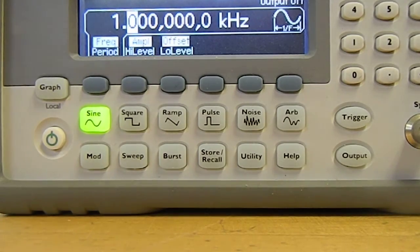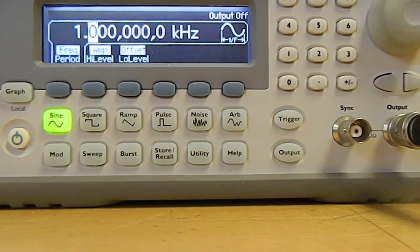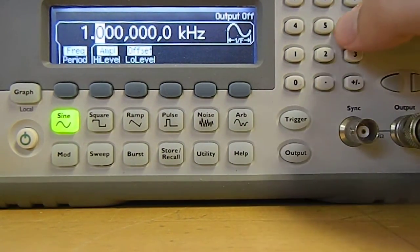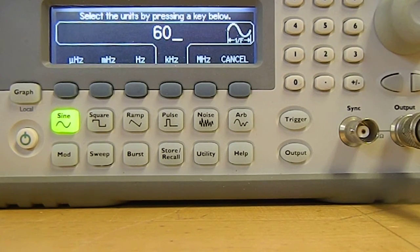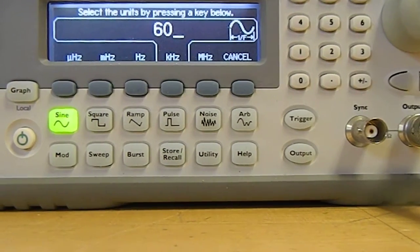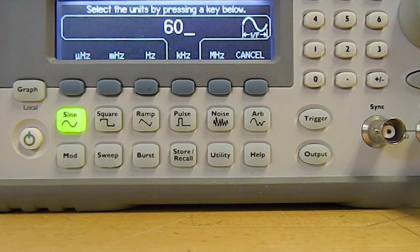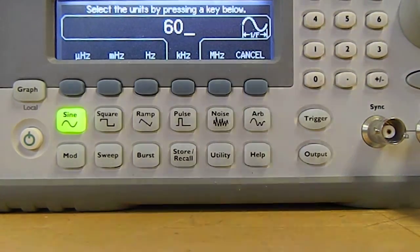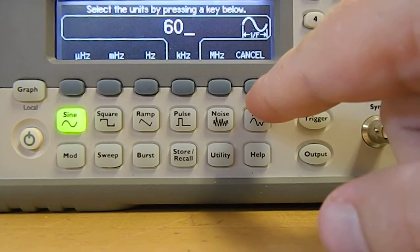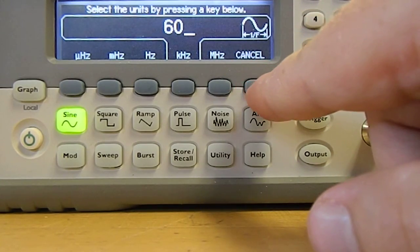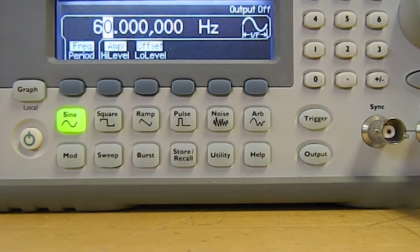And then if you want to actually modify it, what you do is you type in the value you want. Once you've typed in that value, you see that the soft keys now correspond to certain frequency ranges. You have millihertz, microhertz, hertz, kilohertz, and megahertz. And if you don't like any of those options, you can cancel and go back to what you had. But let's choose hertz for now.